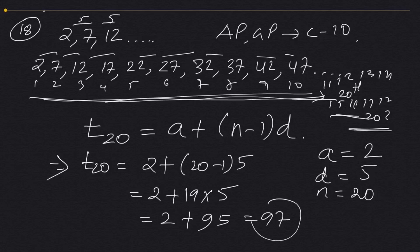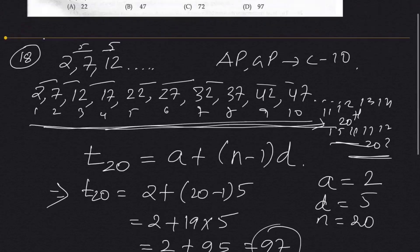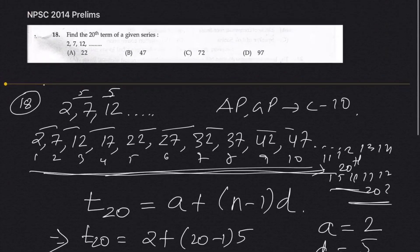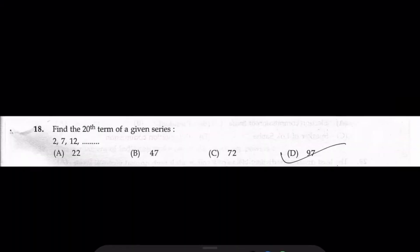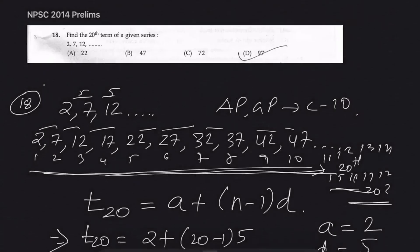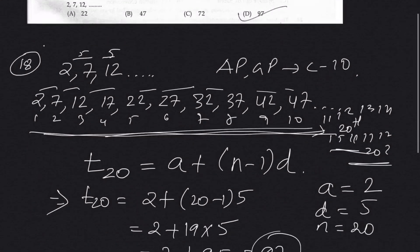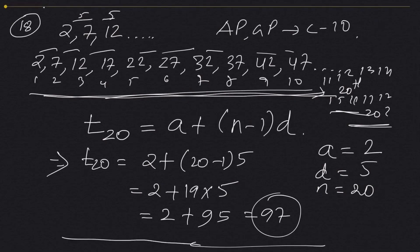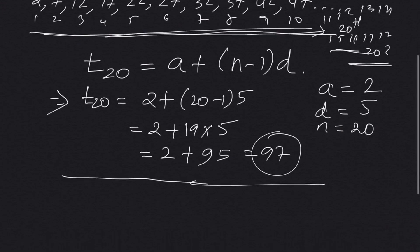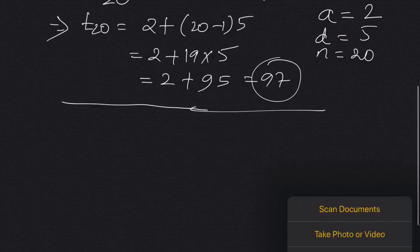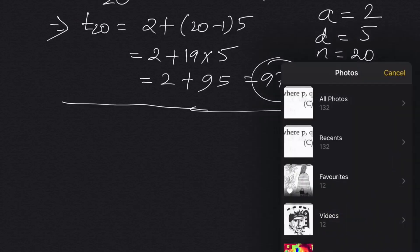So the answer is 97. The 20th term of the sequence will be Option D, which is 97. I hope this is clear. If you have any confusion, please drop a comment below and we'll try to solve it together.